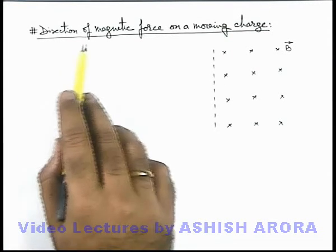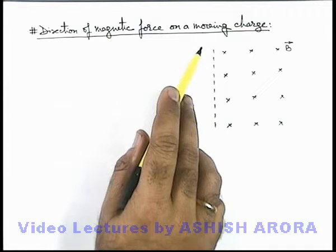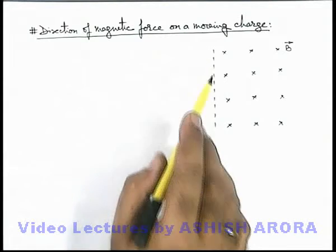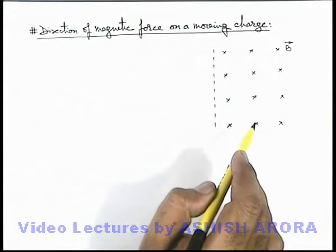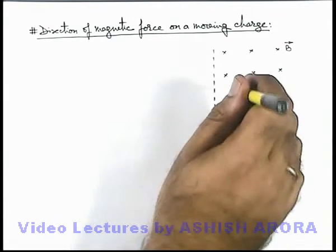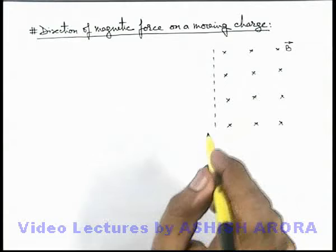Let us discuss the direction of magnetic force on a moving charge when it enters into a magnetic field. Here we can see this is a magnetic induction which exists in the direction into the plane of this sheet, that is in inward direction.